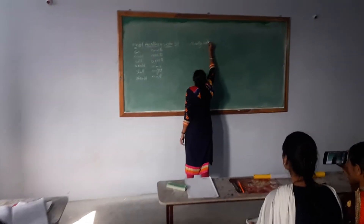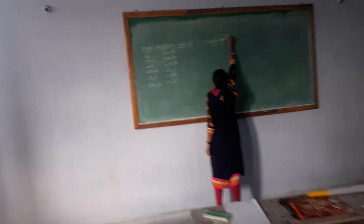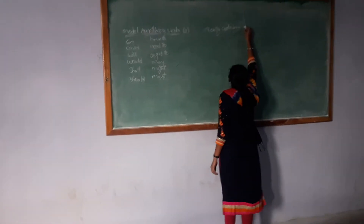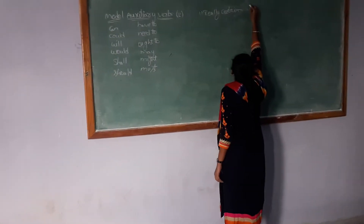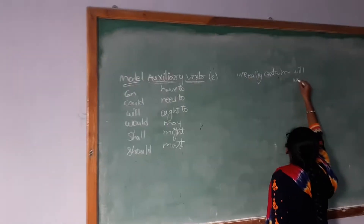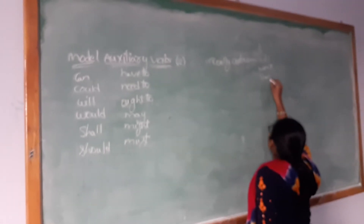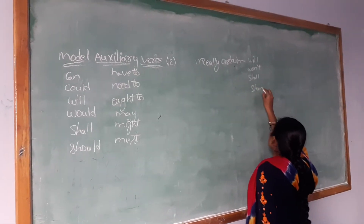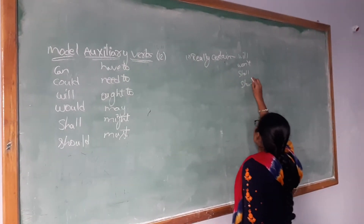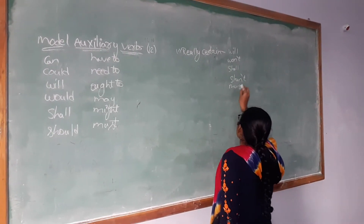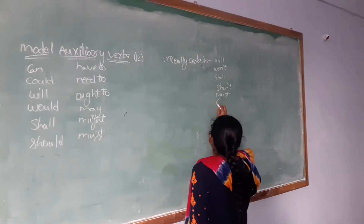They are divided — firstly, by present tense. In present tense, they are: will, won't, shall, must, and can.